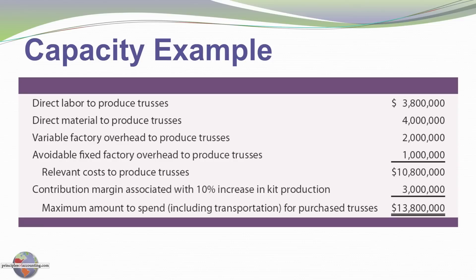Direct labor to produce the trusses is currently $3,800,000. Direct materials current production is $4,000,000. Variable factory overhead is $2,000,000, and avoidable factory overhead is $1,000,000. So the relevant cost to produce the trusses is $10,800,000. By freeing up capacity, we're able to produce an additional 10%, which increases our overall margin by $3,000,000. So we can spend up to $13,800,000 on outsourcing given the costs we're able to avoid and the additional contribution we're able to generate from the freed-up capacity.